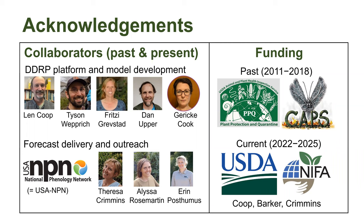Key collaborators in developing the modeling tool I'm going to be talking about today include Dr. Len Koop, who works at the Oregon IPM Center and Department of Horticulture, Tyson Weprich, Fritzie Grevstad, Dan Upper, and Garricka Cook. Our collaborators on forecast delivery and outreach include Teresa Crimmins, Alyssa Rosemartin, and Aaron Postomus at the USA National Phenology Network, also referred to as USA NPN. Past work was primarily funded by USDA APHIS PPQ in support of the CAPS program. Current funding is from USDA NIFA AFRI Tactical Sciences and Biosecurity Program, with Len Koop as PI and me and Teresa Crimmins as co-PIs.